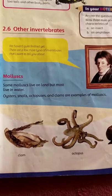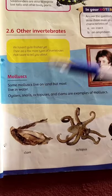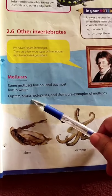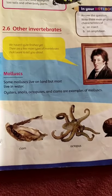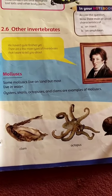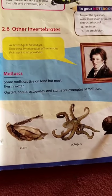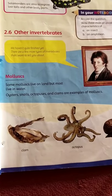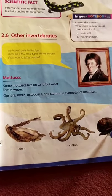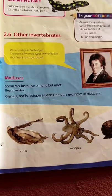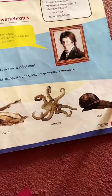The next invertebrate class is Molluscs. Examples include oysters, snails, octopus, and clams. People in other countries use them as food. These are watery and land animals. Some kinds of molluscs live on the ground — the snail is also a mollusc.